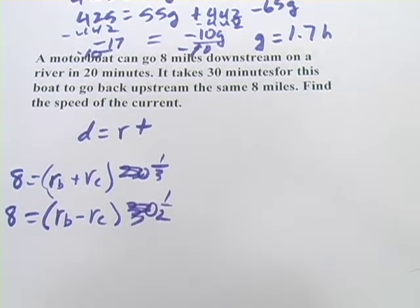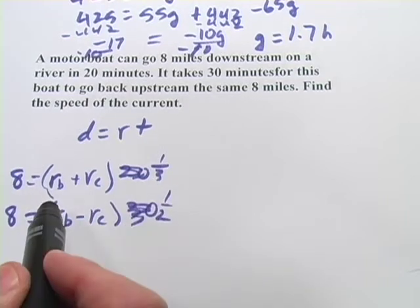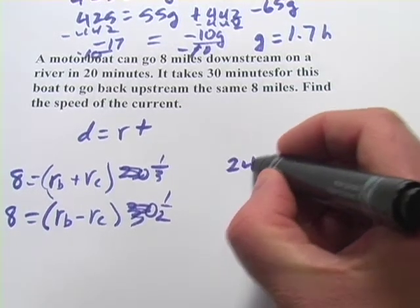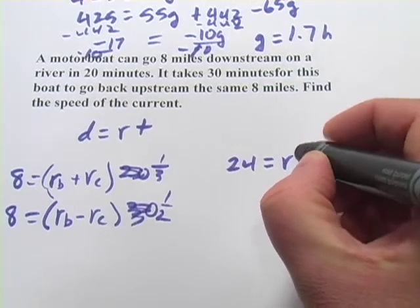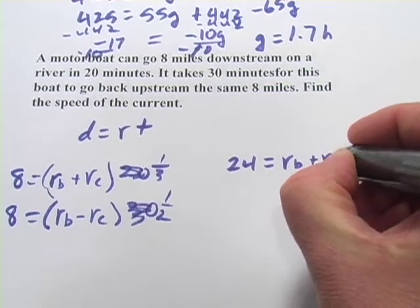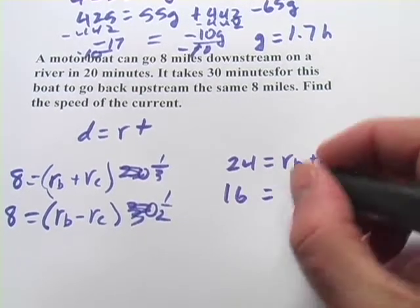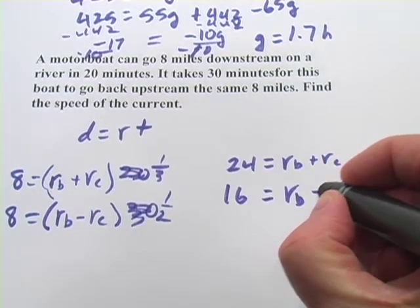Okay, so we can, actually what I'd like to do is multiply this top equation by 3 to get rid of that fraction. So we would get 24 equals R sub B plus R sub C. And this one I'll multiply both sides by 2, so I get 16 equals R sub B minus R sub C.